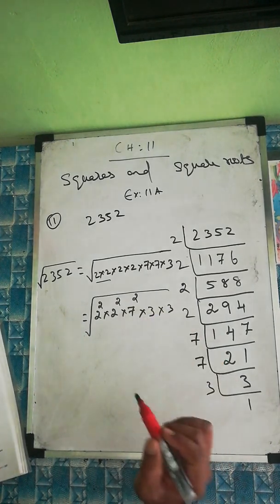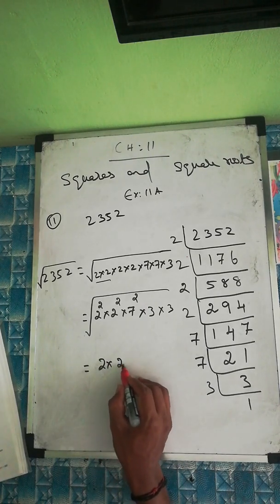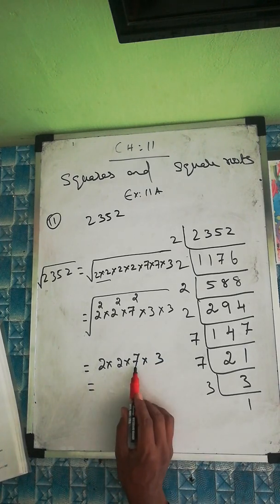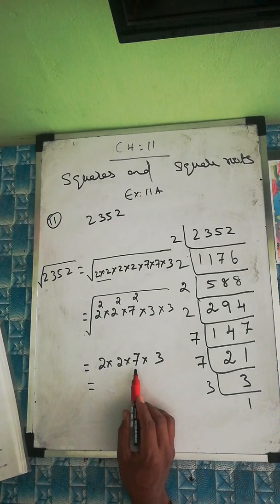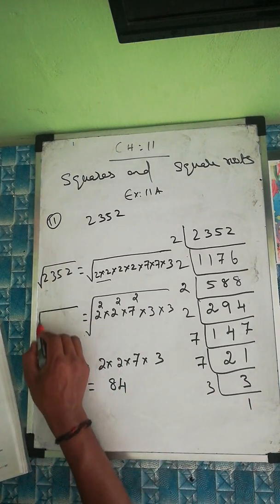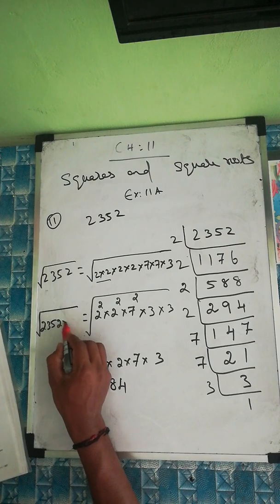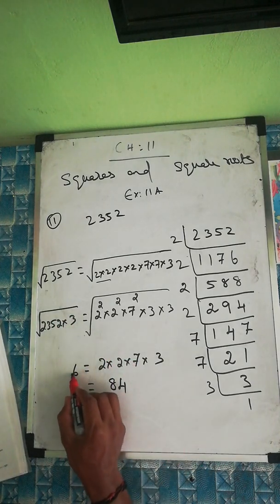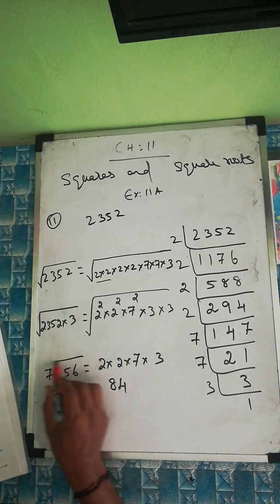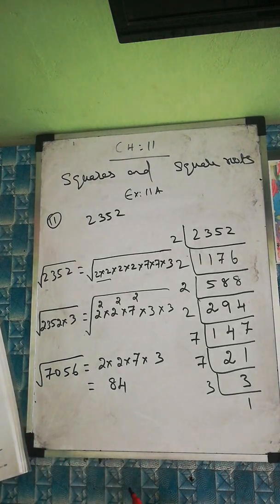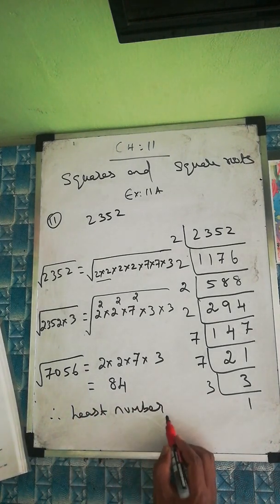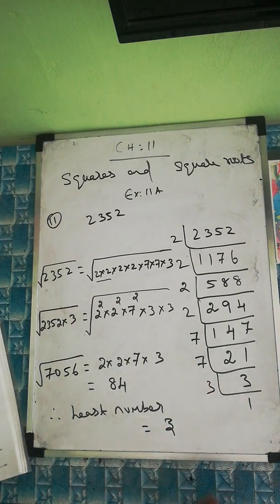We need one more 3 to make a pair. Multiplying 2352 × 3 = 7056. The square root is then 2 × 2 × 7 × 3 = 84. Therefore, the least number to multiply is 3, giving the perfect square 7056 with square root 84.